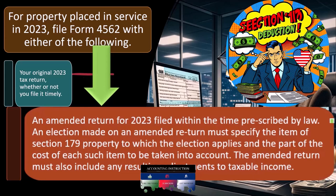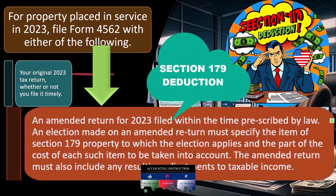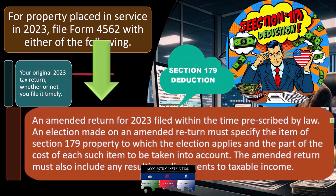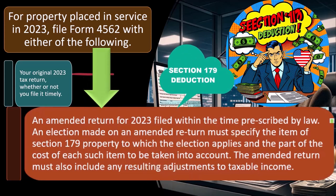There's a cap on the Section 179 deduction. So if you can't apply the 179 to all the property, then you're going to have to tell the IRS which property the 179 is being applied to.